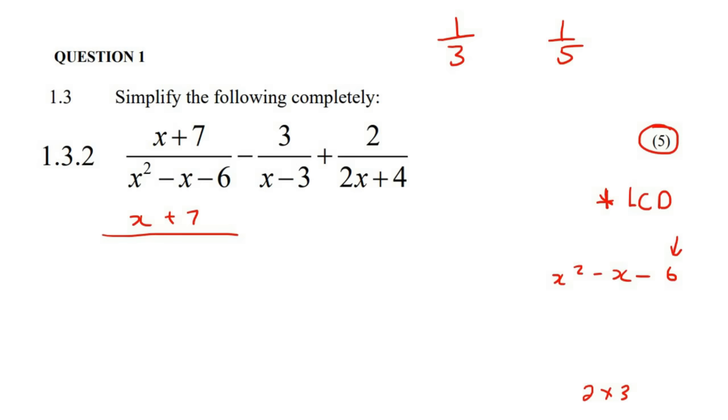Now, which one should we choose? Should we choose the 1 and the 6, or should we choose the 2 and the 3? Well, how do we work this out? What we do is we look at this term here in the middle with the x, and we try to make minus 1. So you cannot make minus 1 using these two numbers.